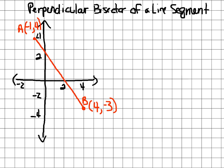A perpendicular bisector is a line that is perpendicular to this line segment and goes through the midpoint, because 'bisect' means cut in half. So it cuts line segment AB in half and its slope is perpendicular to AB. The midpoint is approximately here.